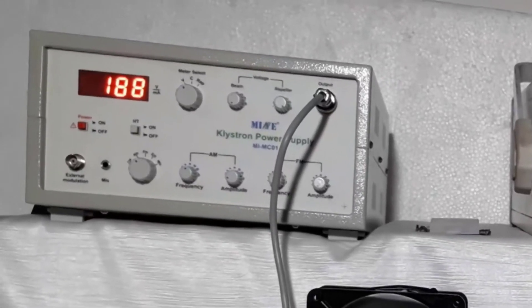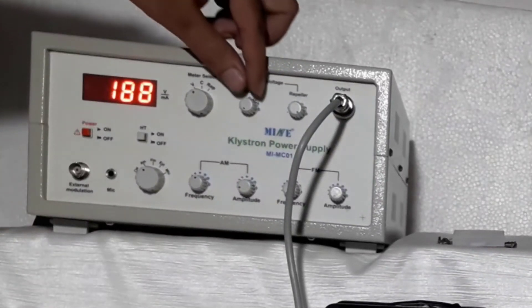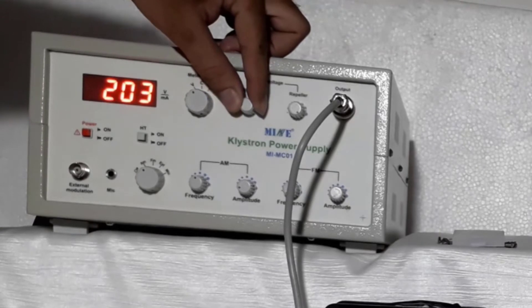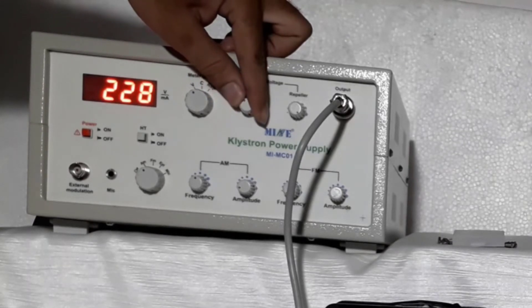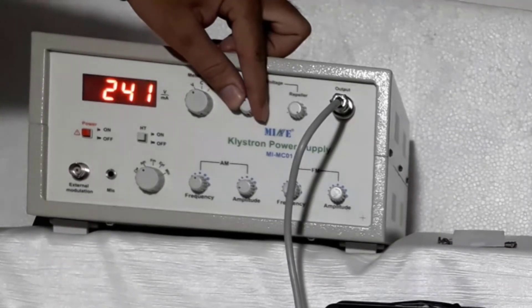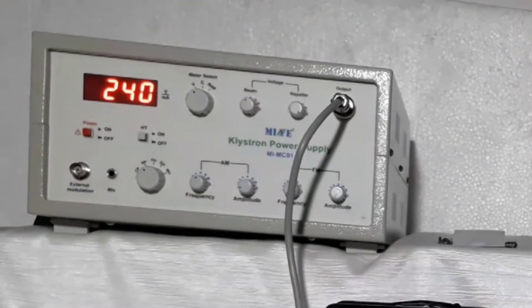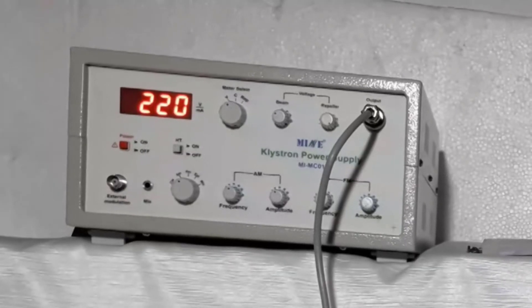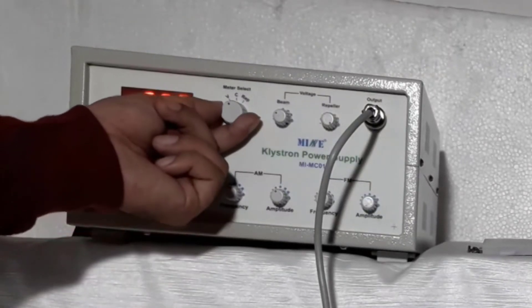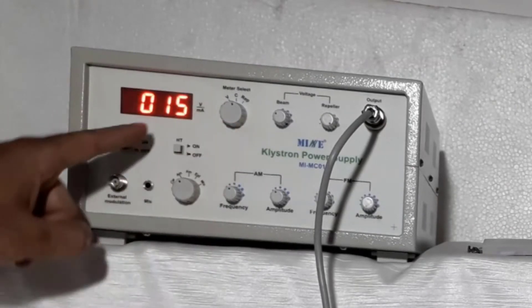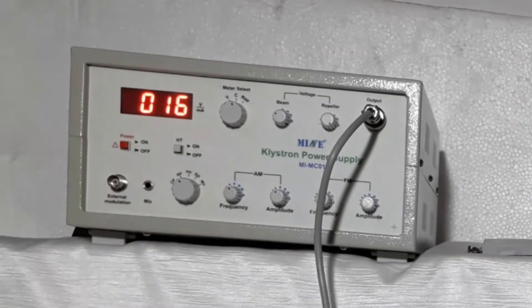Now you will see beam voltage at display meter. Set it up to 220 volts using beam voltage knob. Now change meter select knob at current and see the value of current. It would approximately 15 to 20 milliampere.